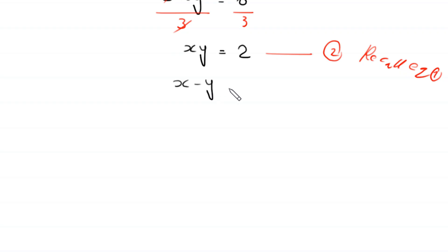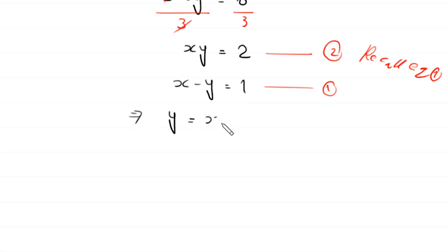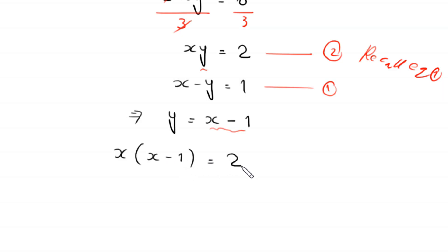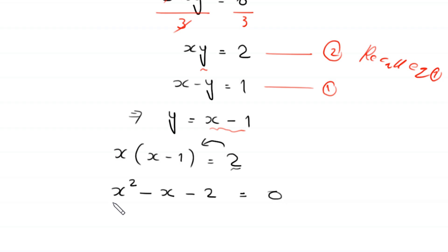Equation 1 is x - y = 1. To find the values of x and y, we solve this system. From equation 1, moving y to the right gives y = x - 1. Substituting into equation 2: x(x - 1) = 2. Expanding: x² - x = 2, which rearranges to x² - x - 2 = 0.